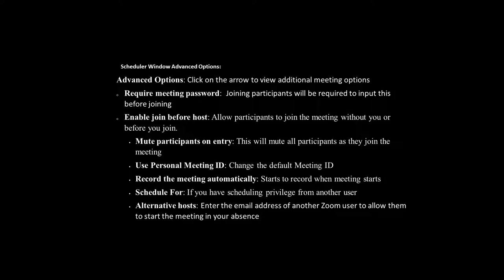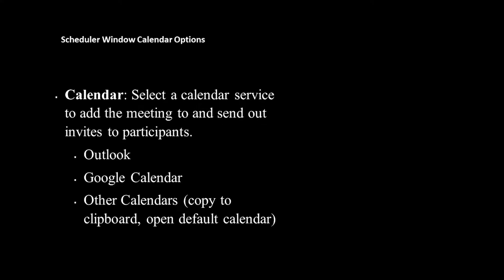You can set the meeting to record automatically when it starts, or uncheck that and start recording manually when you're ready. If someone gives you scheduling privileges you can schedule on their behalf, or you can give someone scheduling privileges to schedule on yours. At the very bottom of the scheduling window you can select a calendar - either Outlook, Google, or other. If you use another calendar you'll copy it to the clipboard or it will open your default calendar.